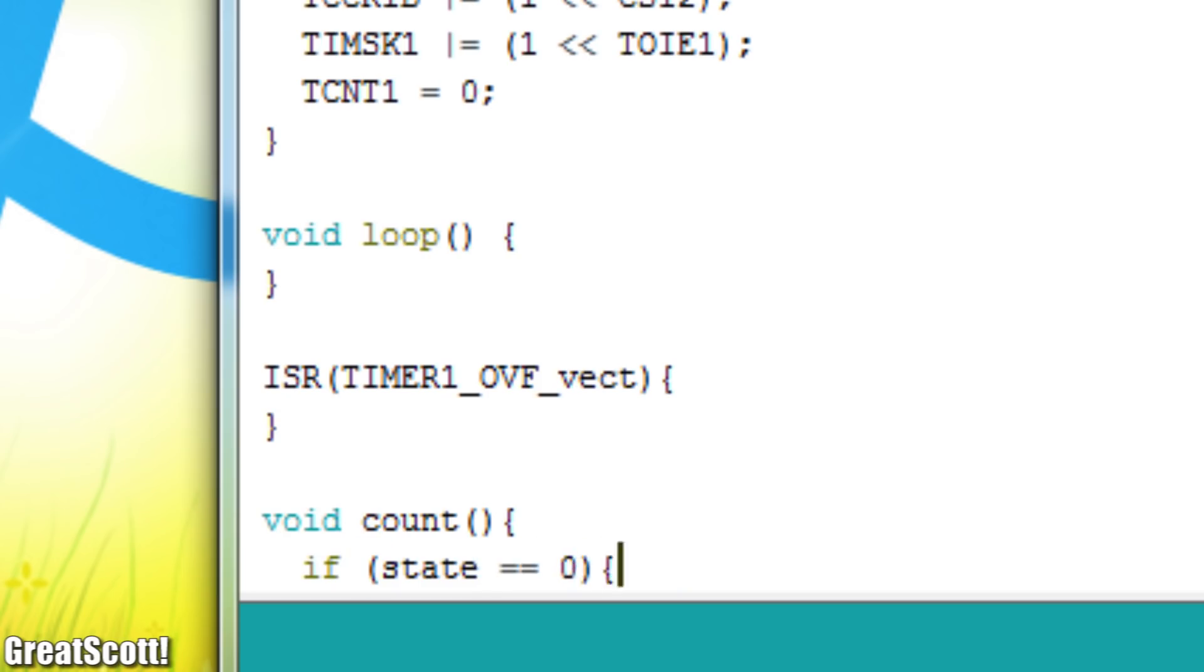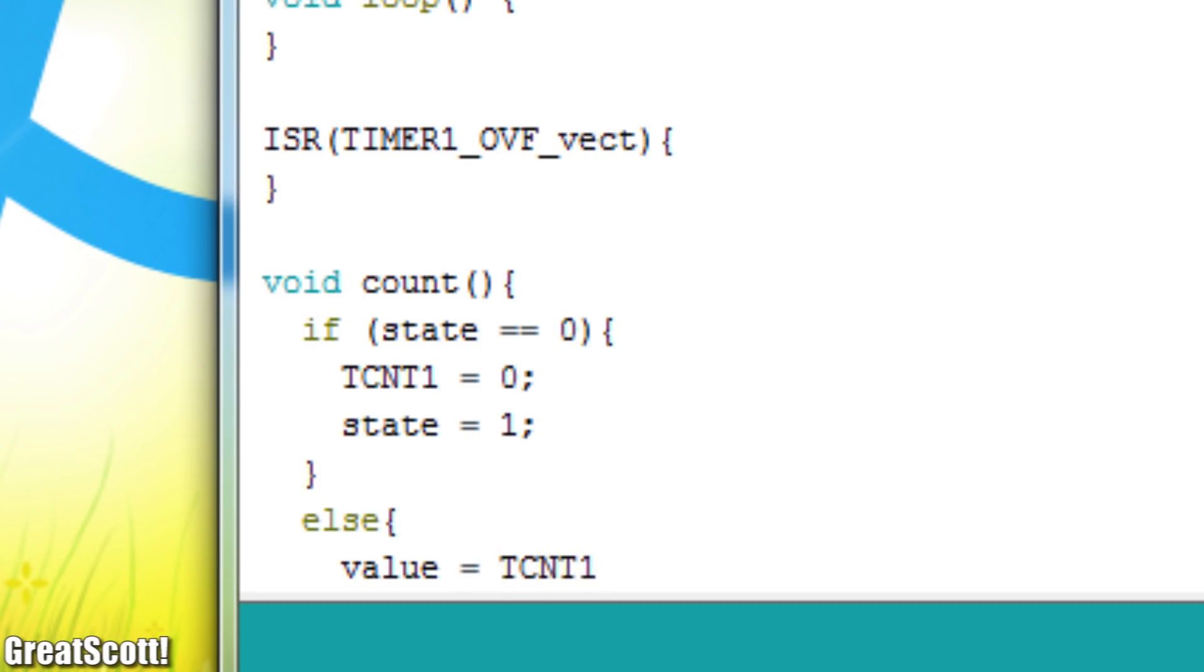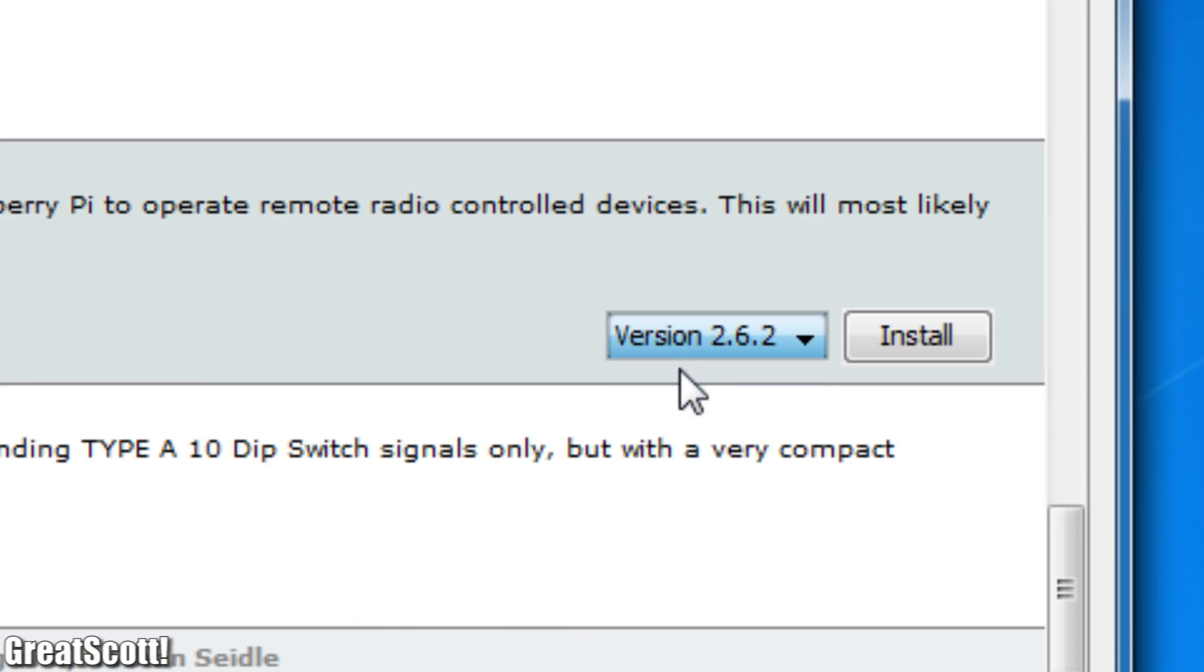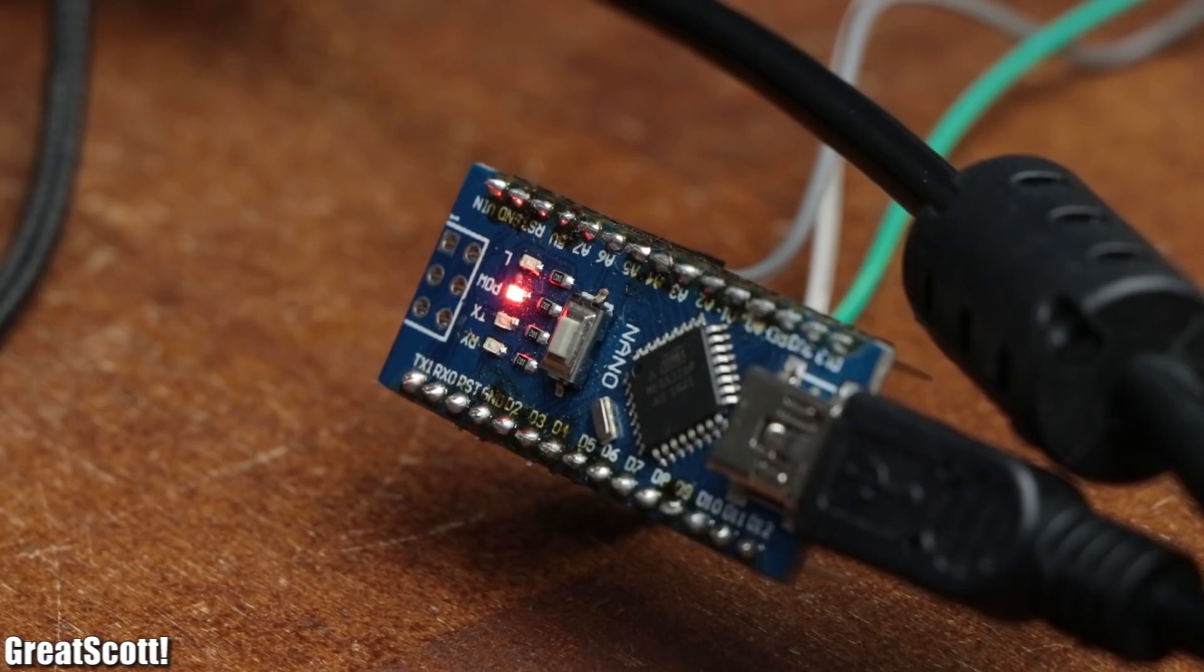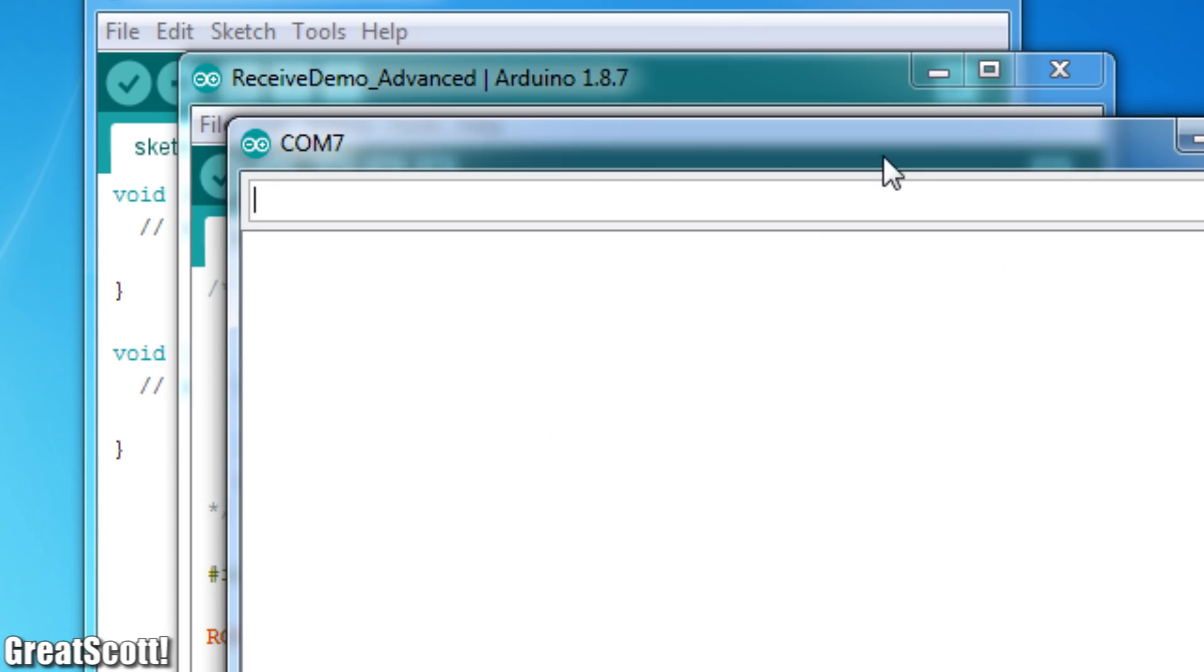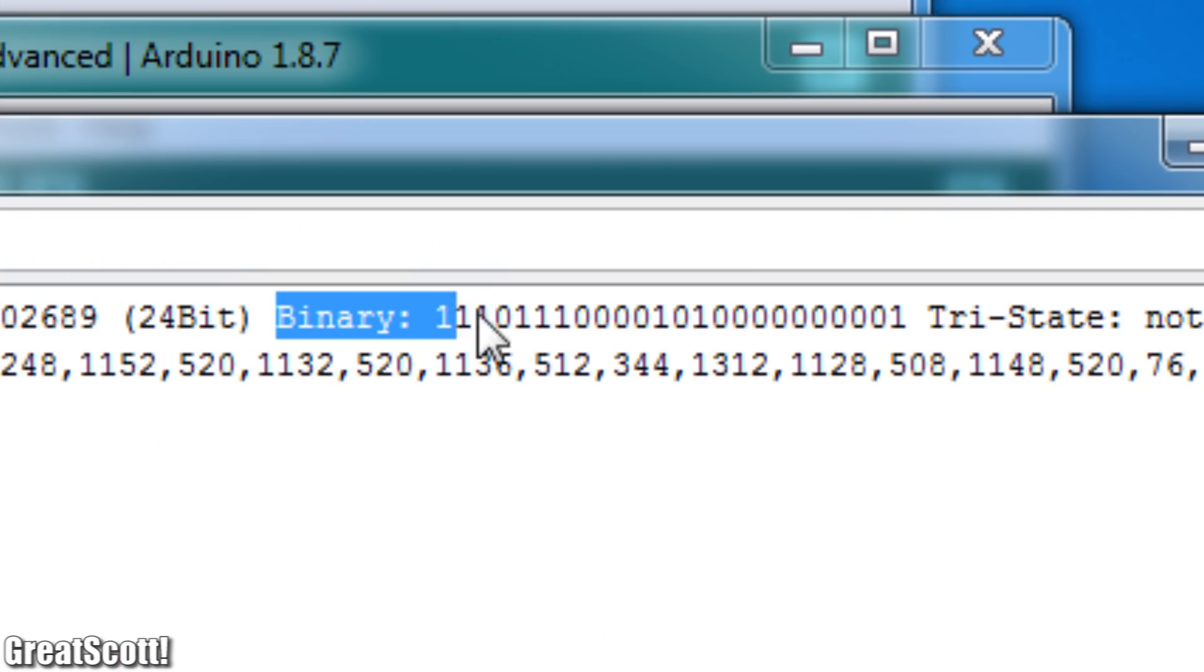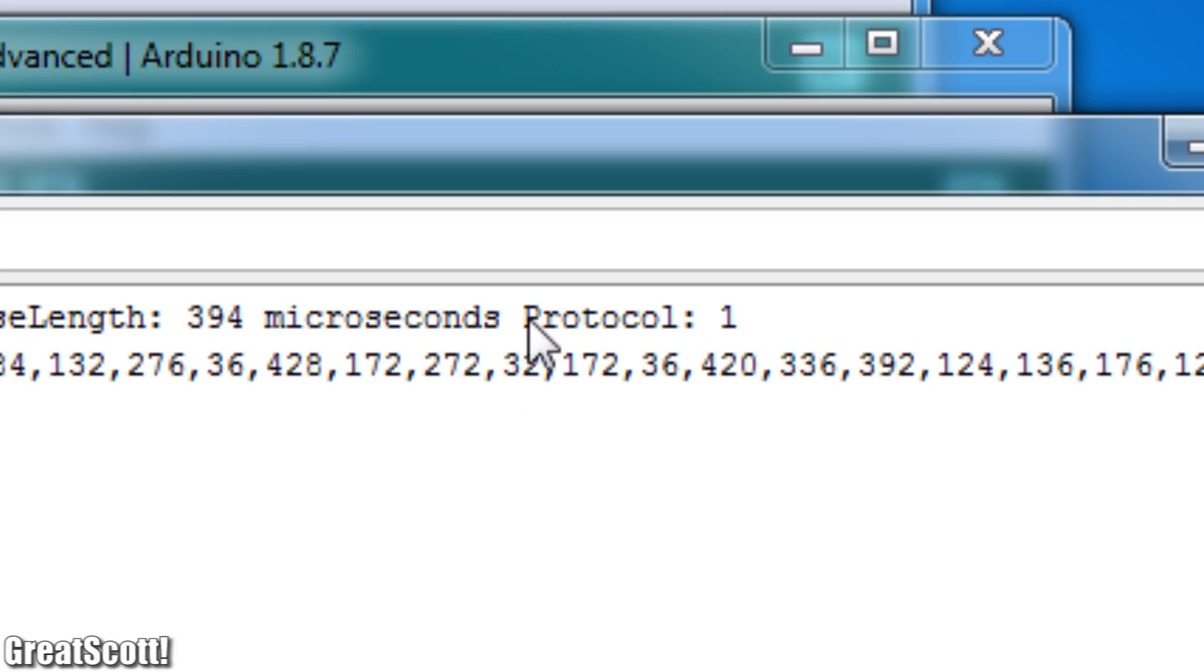But while trying to write this code I realized that a way easier to use Arduino library already exists. The RC switch library. So after downloading it, opening up the receive demo advanced sketch, uploading it, opening the serial monitor and finally pushing a button on the remote I was greeted not only with the mandatory binary data codes but also with the fact that the signal used protocol 1.